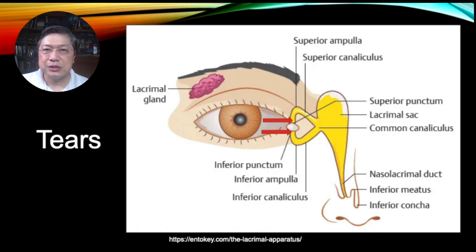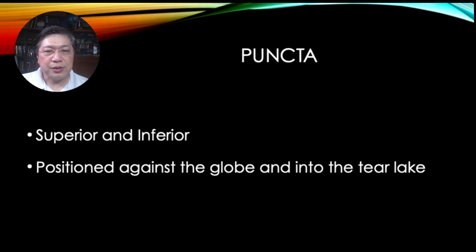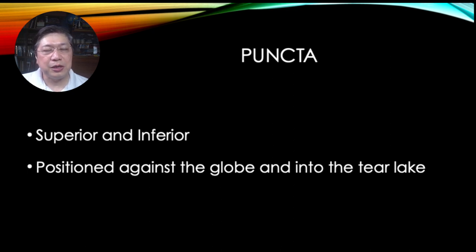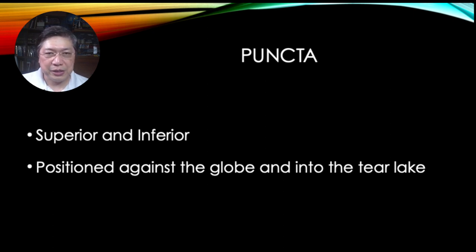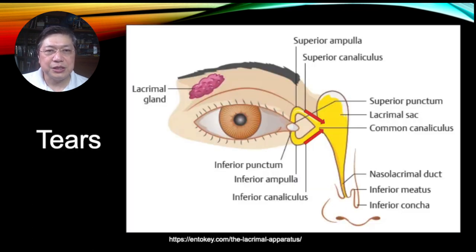The punctum is very important because it's the opening of the drainage. If tears cannot find their way to the punctum, drainage will not work and you will have an overflow of tears. You have both a superior and inferior punctum, and the punctum is positioned against the eyeball, dipping into the tear lake. In primary position, the punctum cannot be seen without touching the patient. Once tears enter the punctum, they get drawn into the ampulla and into the inferior and superior canaliculi — the canaliculi are about 8 to 12 millimeters long.